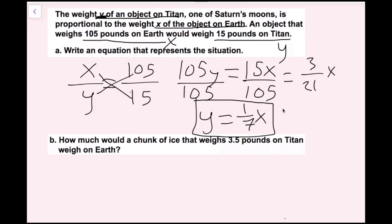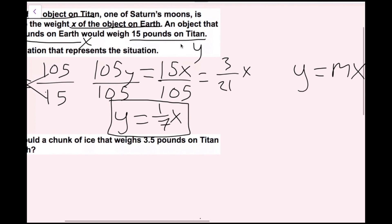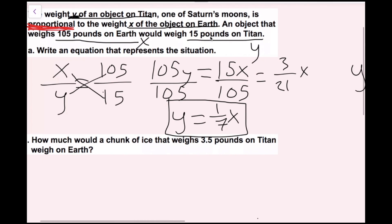Another thing we could have done without writing the proportion: I could have understood that the word proportional means the graph goes through the origin and the equation is in the form y equals mx. In my equation I need y and x, so all I'd have to find is m. I know 15 pounds on Titan and 105 pounds on Earth, with x as Earth and y as Titan, so I can plug 15 in for y and 105 in for x.